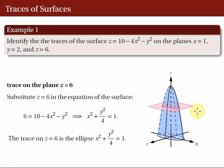Here's the illustration. This is the plane Z = 6, and its intersection with the surface is this red curve — the trace with equation X² + Y²/4 = 1. The next part will be on cylinders.